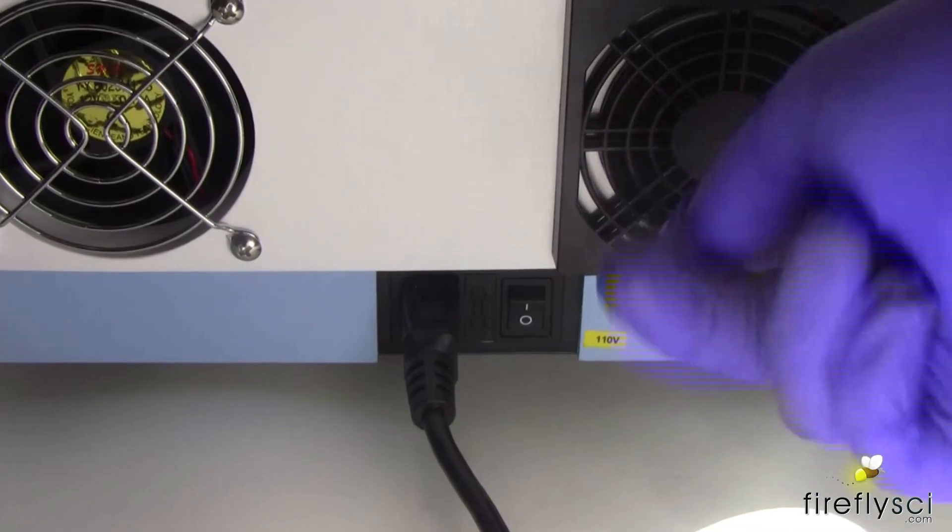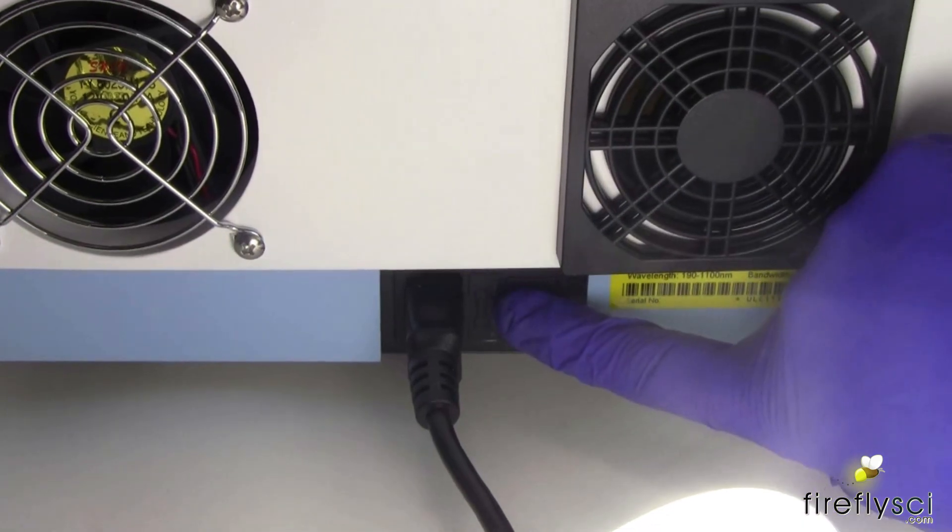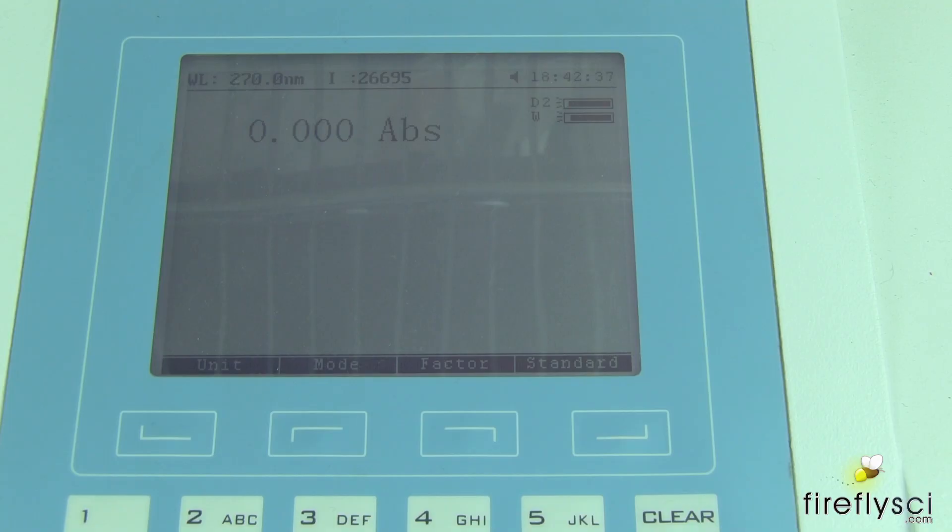As usual, we'll go ahead and let our machine heat up for 45 minutes. Let's do a photometric accuracy test first. The Wave 7 has 5 different verification points: 270 nanometers, 280, 300, 320, and 340. We'll use 280 for this experiment.